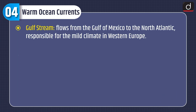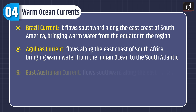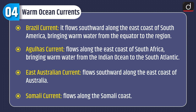Warm ocean currents include: the Gulf Stream, which flows from the Gulf of Mexico to the North Atlantic and is responsible for the mild climate in Western Europe; the North Atlantic Drift, an extension of the Gulf Stream bringing warm water and mild temperatures to the British Isles; the Kuroshio Current, flowing along the east coast of Japan; the Brazil Current, flowing southward along the east coast of South America; the Agulhas Current along the east coast of South Africa bringing warm water from the Indian Ocean; the East Australian Current flowing southward along the east coast of Australia; and the Somali Current flowing along the Somali coast.